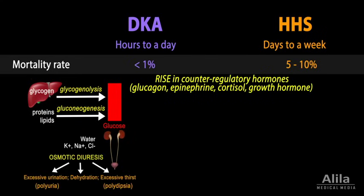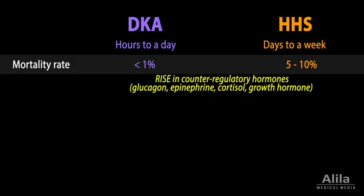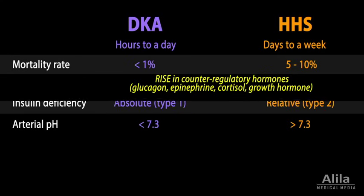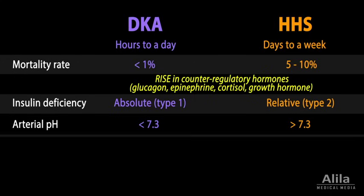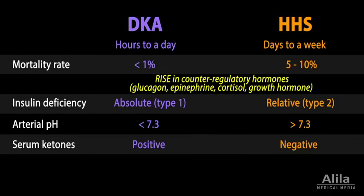The major difference between HHS and DKA is the absence of acidosis in HHS. This is because, unlike DKA, the level of insulin in HHS patients is high enough to suppress lipolysis and hence ketogenesis. This explains why HHS occurs more often in type 2 diabetics, who have more or less normal levels of circulating insulin.